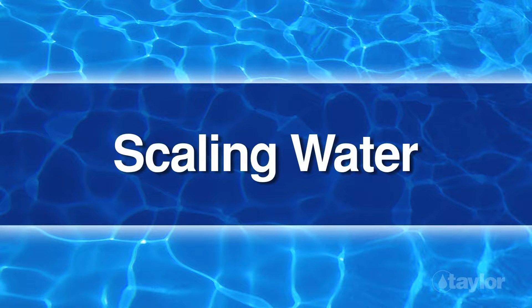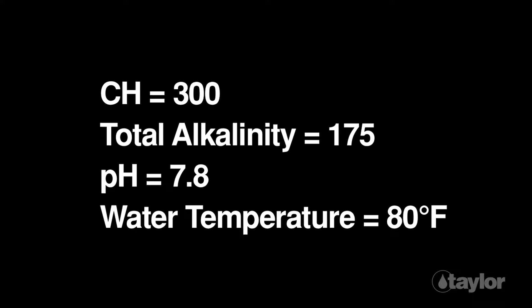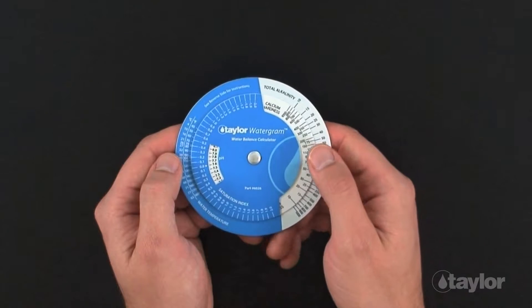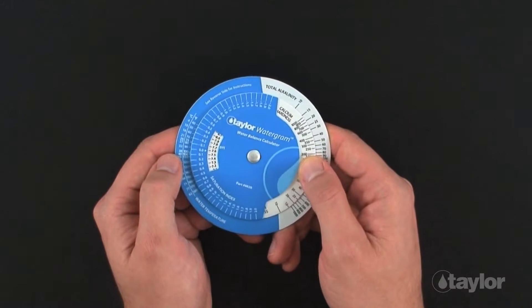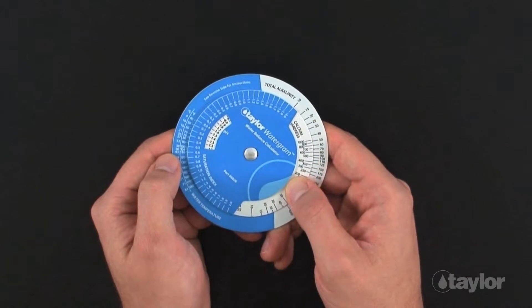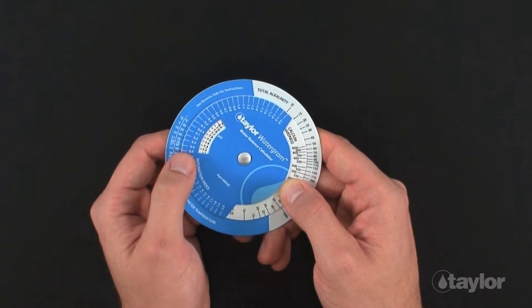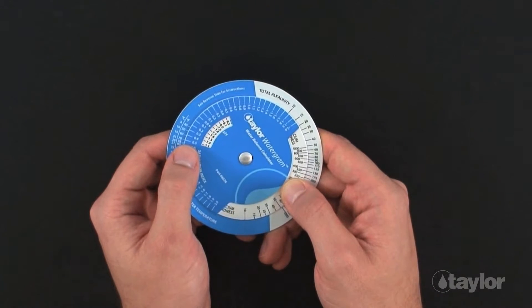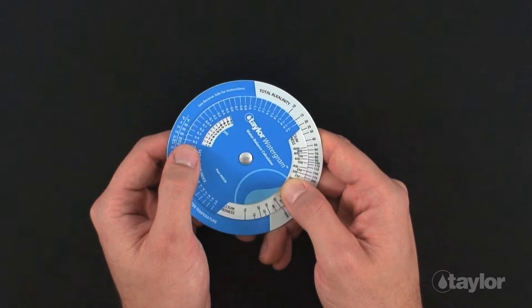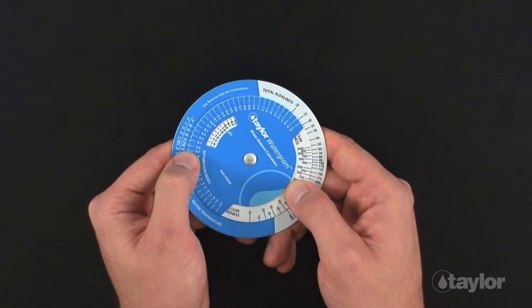Scaling water. In this final demonstration, we will be using values that will give us a saturation index that indicates scaling water. Set the calcium hardness value of 300 opposite the total alkalinity value of 175 on the Watergram. Hold the calcium hardness and total alkalinity values where they are and turn the wheel until the arrow points to the pH value of 7.8. Find the water temperature of 80 degrees Fahrenheit.